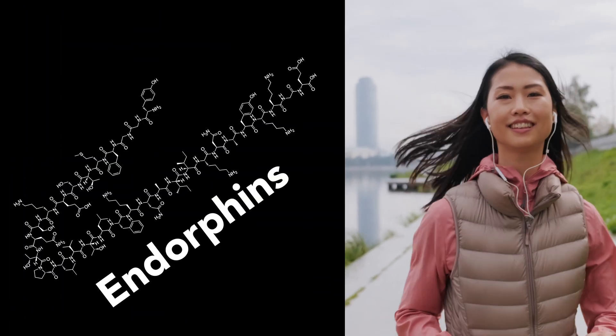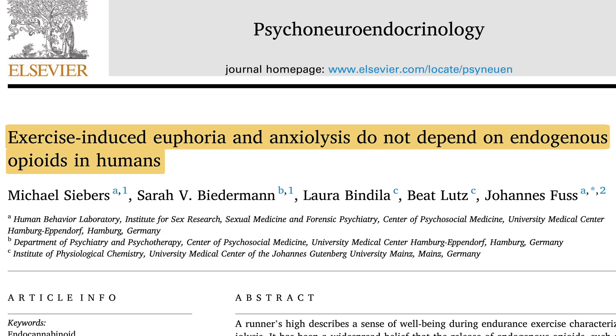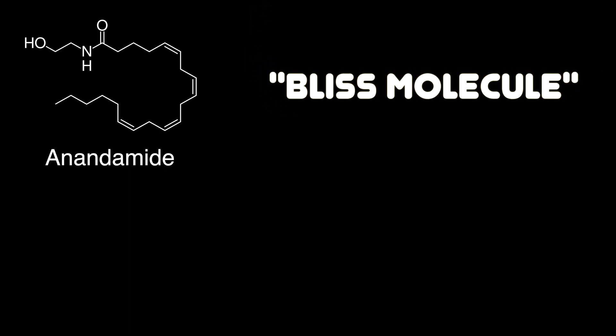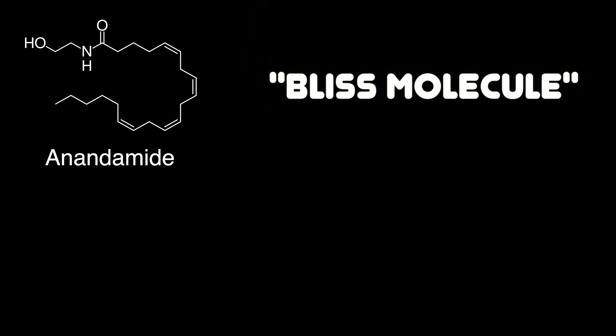For example, you know that runner's high that you get after a long workout? Well, it was initially thought to be due to the release of endorphins. However, researchers now believe that an intense run stimulates the endocannabinoid system to produce anandamide, also called the bliss molecule, and 2-arachidonoylglycerol, this one.